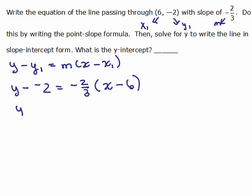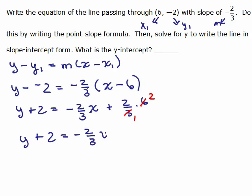Okay, so we have Y plus 2 equals negative 2/3 and we're going to do the distributive property, negative 2/3 X. Now, a negative times a negative is plus 2/3 times 6. So when you cancel, we're going to get Y plus 2 is negative 2/3 X plus 4.